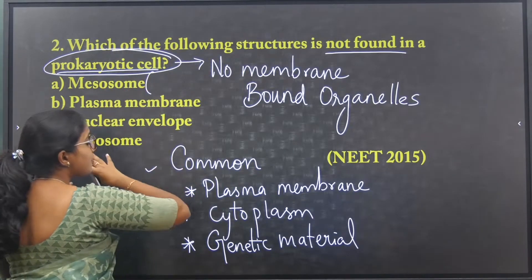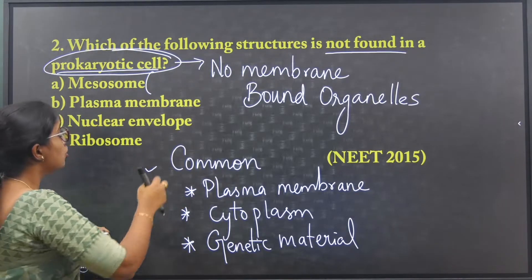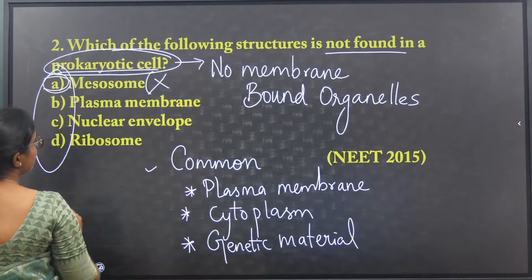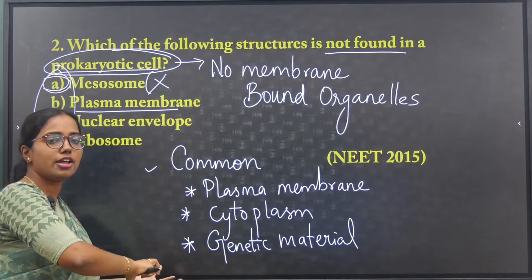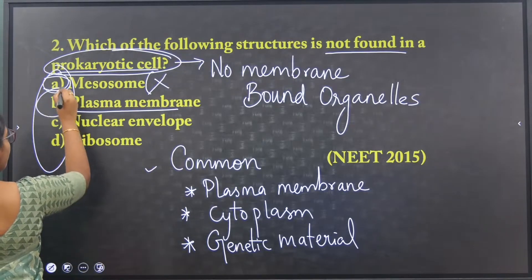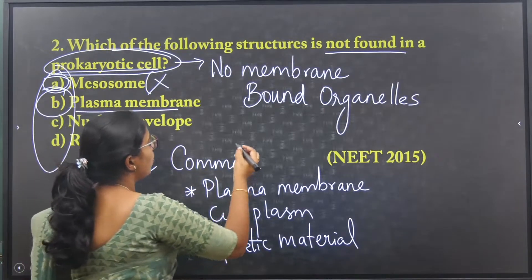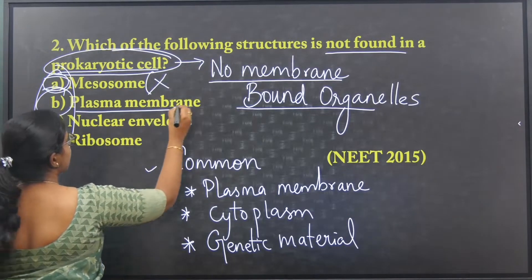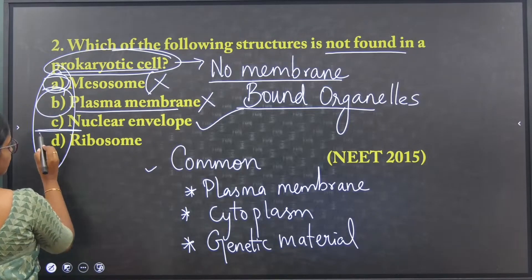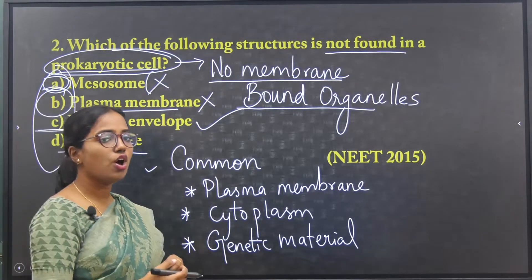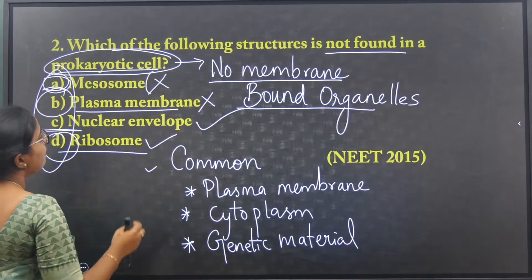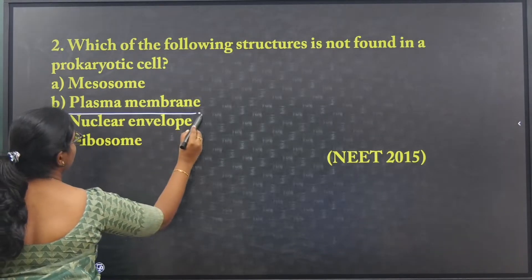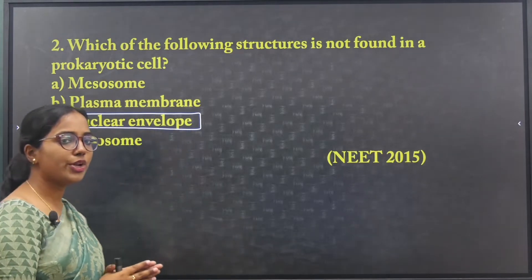Mesosome is the respiratory substance — it is considered the mitochondria equivalent in prokaryotic cells, so it is found there. Plasma membrane is also found in prokaryotic cells. The correct answer is nuclear envelope — the nuclear envelope is NOT found in the prokaryotic cell structure.